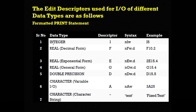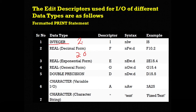Now this table is very important. It lists data types, their edit descriptors, syntax, and examples. For integer, the descriptor is i and the syntax is n i w, where n is the number of repetitions, i stands for integer, and w stands for the width. For example, i5 — here n is not given so by default it is 1. For real in decimal form, we use f, with syntax n f w.d. The d stands for digits after the decimal point. For example, f10.2 means overall width of 10 and 2 digits after the decimal point.